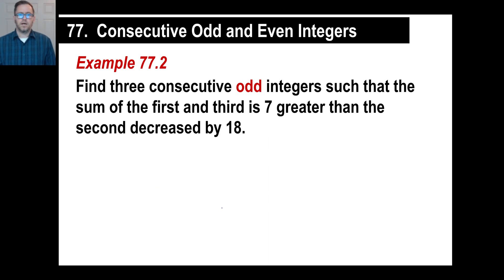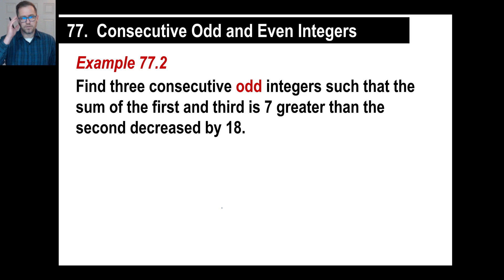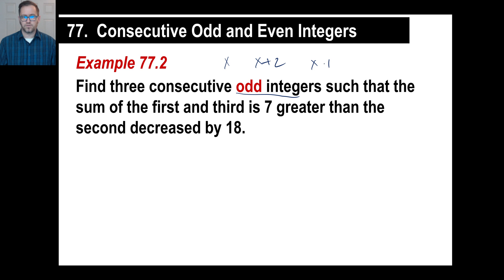All right, try another one. Three consecutive odd integers — again, don't get caught saying it'll be x, then x plus 1, x plus 3, x plus 5 because 1, 3, and 5 are odd numbers. No — it doesn't matter whether they're odd or even, there are always two between them. So three consecutive odds: x, x plus 2, x plus 4.